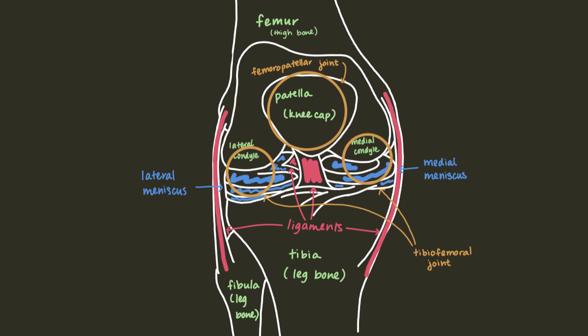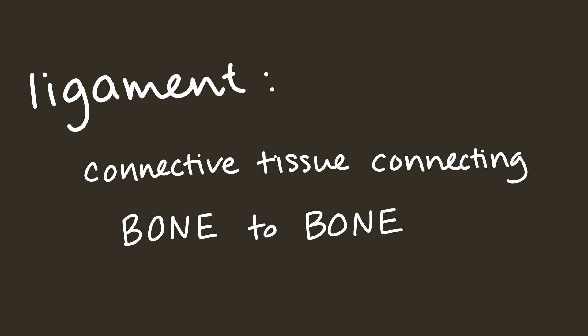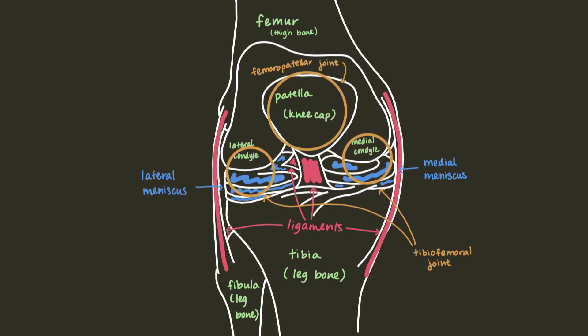A bunch of ligaments exist in the knee. A ligament, by the way, is a piece of connective tissue that connects bone to bone. I'm not going to go over them all because frankly we'd be here for too long, but I'll add a link to a good article on the ligaments of the knee in the description if you're interested.